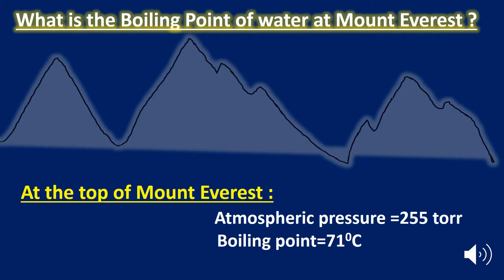At the top of Mount Everest, the atmospheric pressure is 255 torr, so the boiling point of water is 71 degree Celsius.